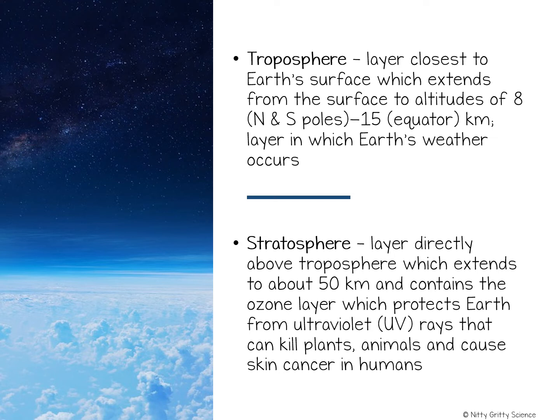The stratosphere extends from the top of the troposphere to about 50 kilometers above Earth's surface. The word strato means layer or spreading out. You would think that increasing altitude in the stratosphere would continue to get colder, but in actuality, the upper stratosphere is warmer than the lower stratosphere. This is because the upper stratosphere contains a layer of ozone — a three-atom form of oxygen — which absorbs energy from the sun and converts that energy into heat, warming the air.